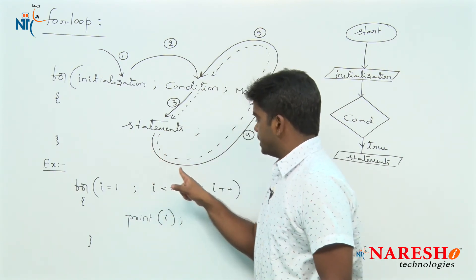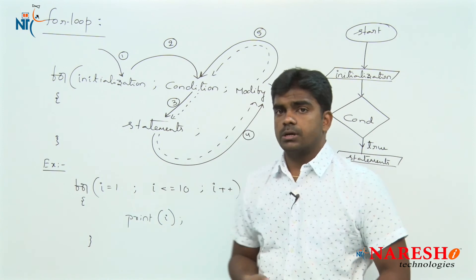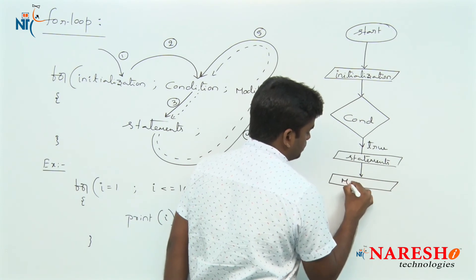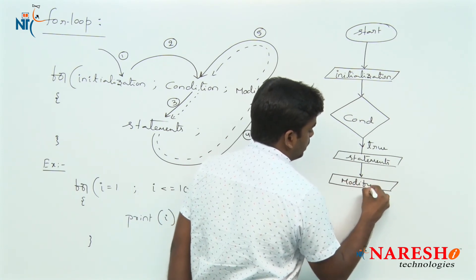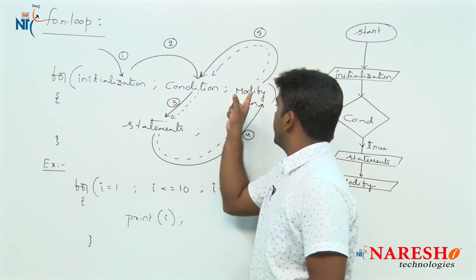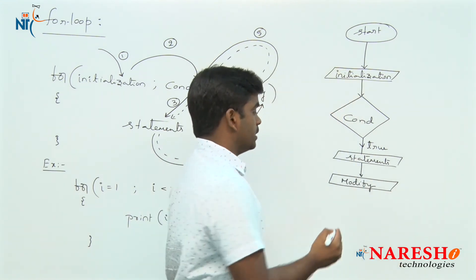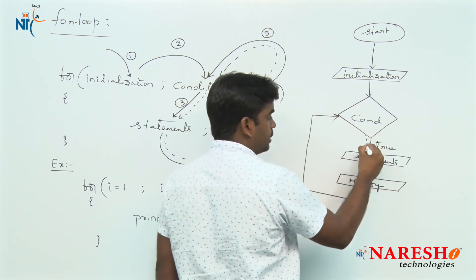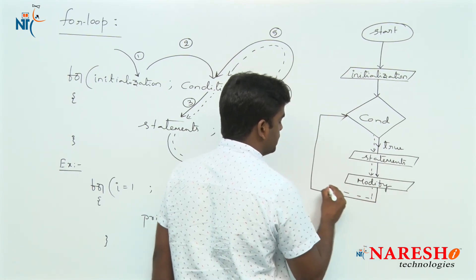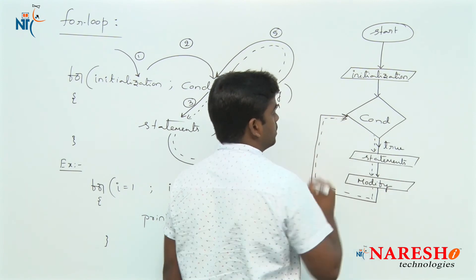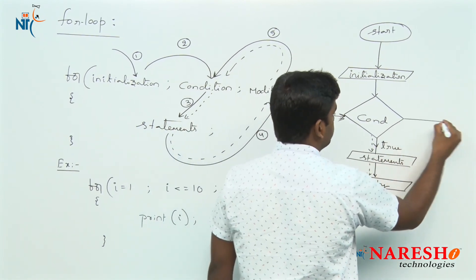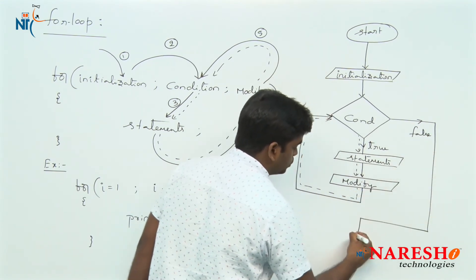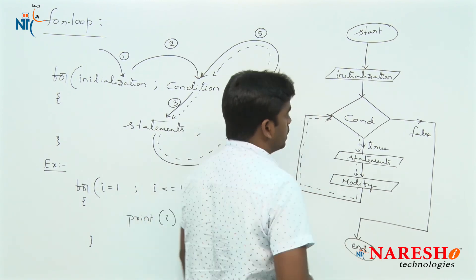After execution of the statements, it will go to modify — modify is also a statement, not a condition, so it is represented with a parallelogram. After modify, again it will go and check the condition. If condition is true, again statements, modify, and check condition again — the loop repeats continuously. Whenever the given condition has failed, the control comes to end.